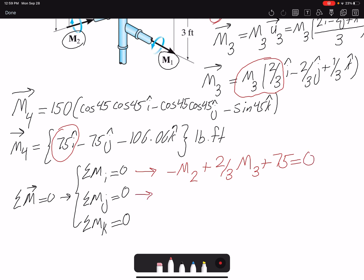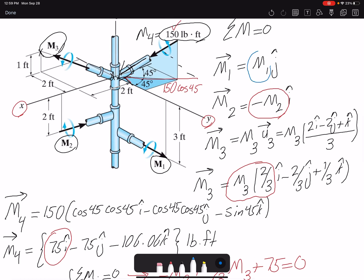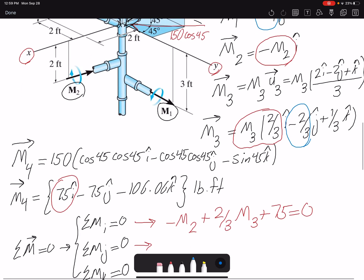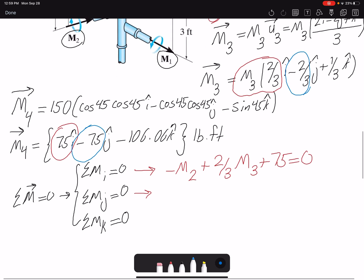Let's go for j component. M1 has a component, M3 has a component, and also M4. So we write our component: M1 minus 2/3 of M3 minus 75 equals zero.